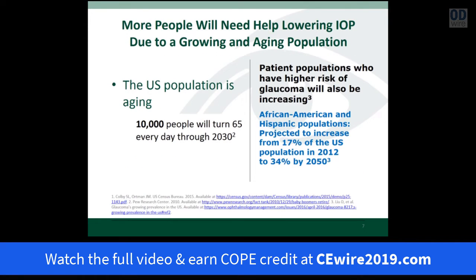We need help making the diagnosis given that we've got an aging population — 10,000 people turn 65 in the United States every day for the next 10 to 20 years. Looking at high-risk populations, the African-American and Hispanic populations are projected to increase from about 17 to 20% today to over 34% by 2050. That shouldn't be a big surprise; we see that growing trend and know there's a high-risk population more at risk of developing glaucoma.